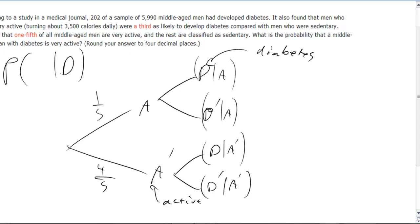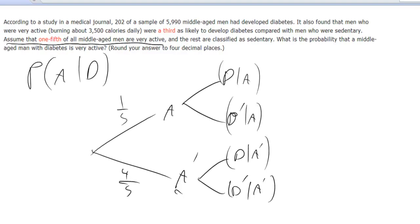So let's go ahead and fill some of this in here now. All right, you can see from right here they assume that one-fifth of all middle-aged men are very active. I apologize, I realize I'm not quite on screen. Okay, so what's the probability that a man is active given that he has diabetes?